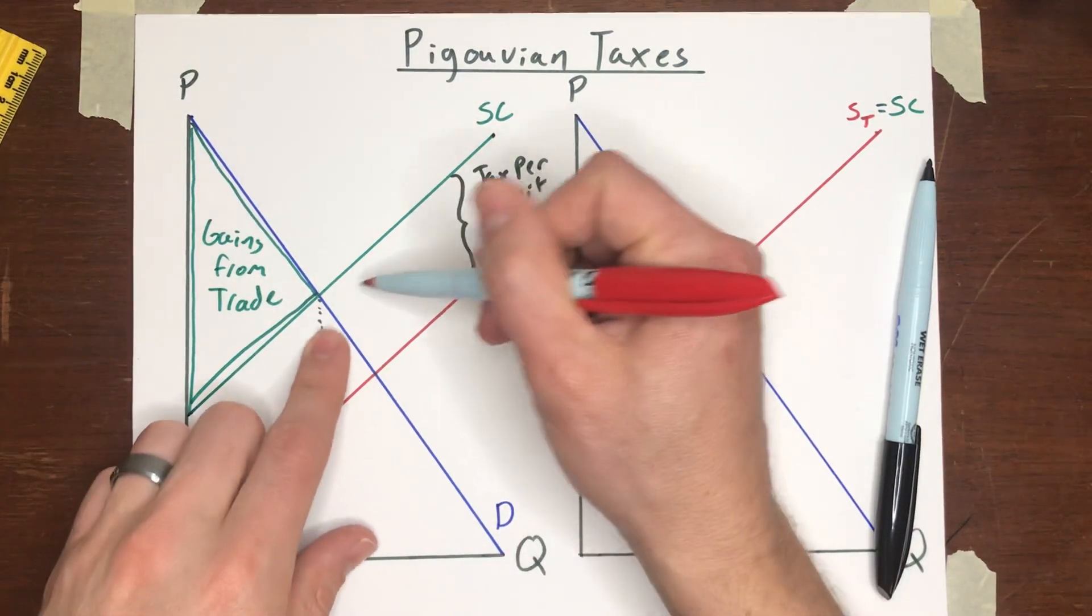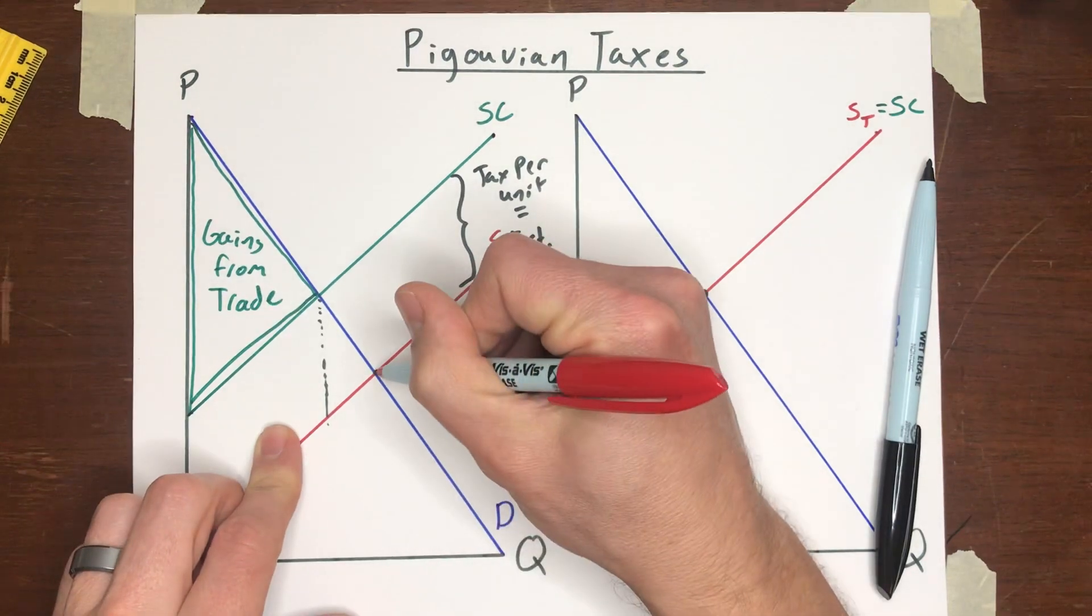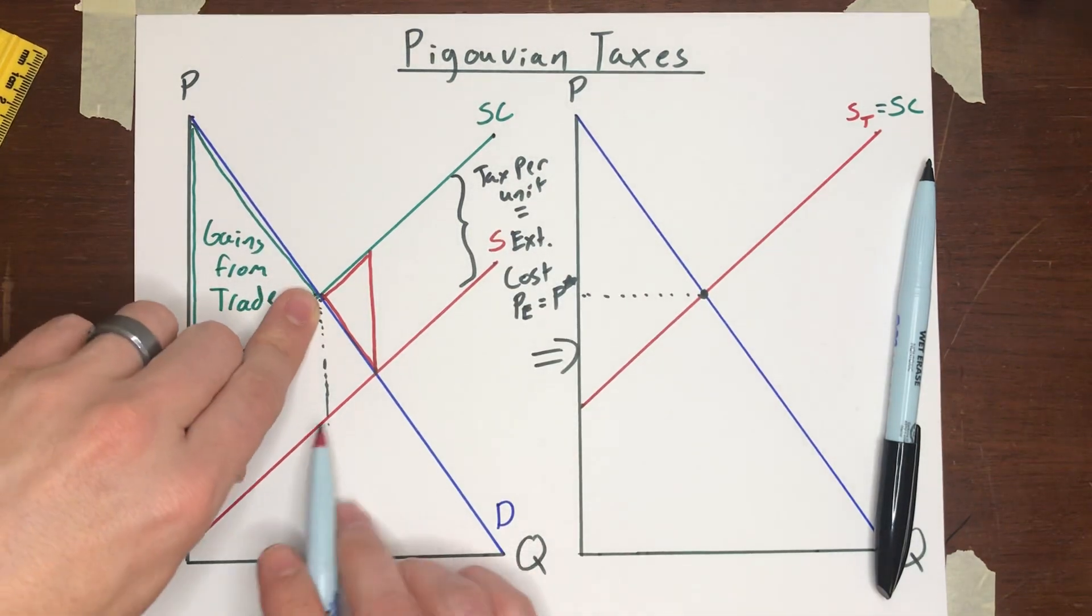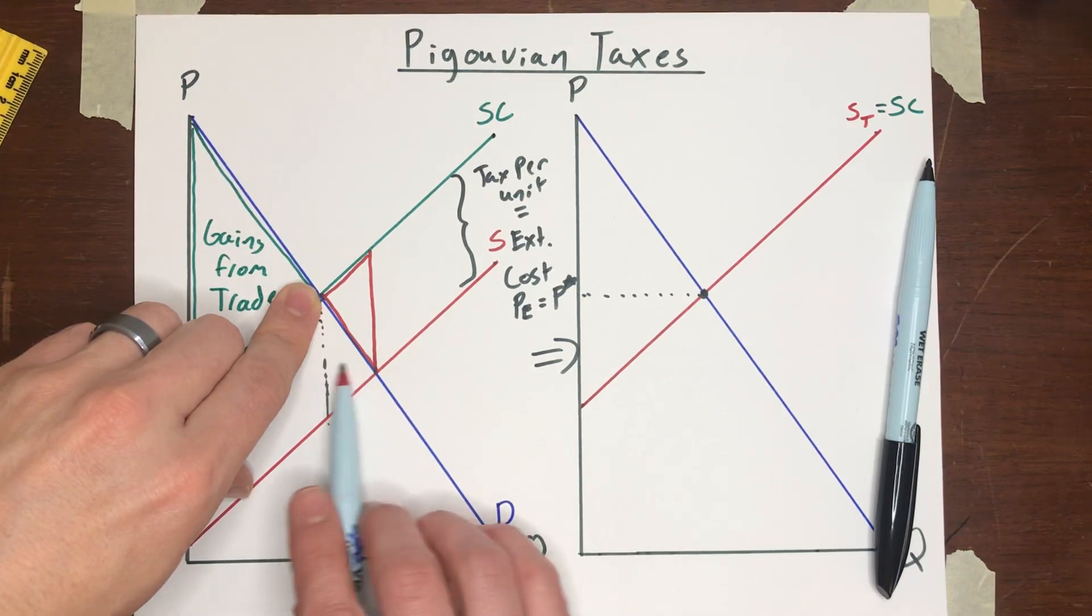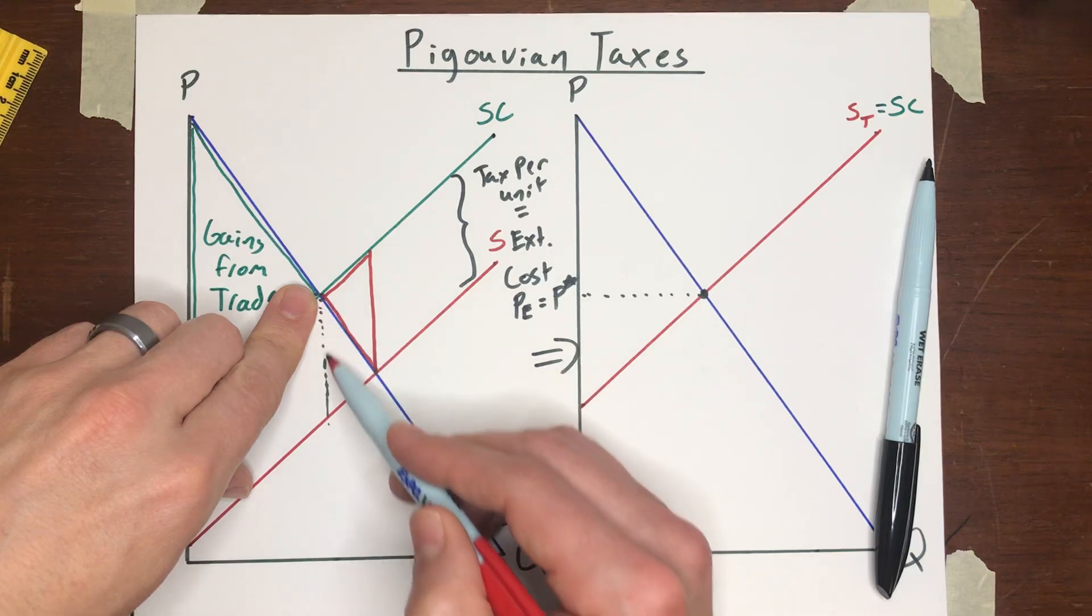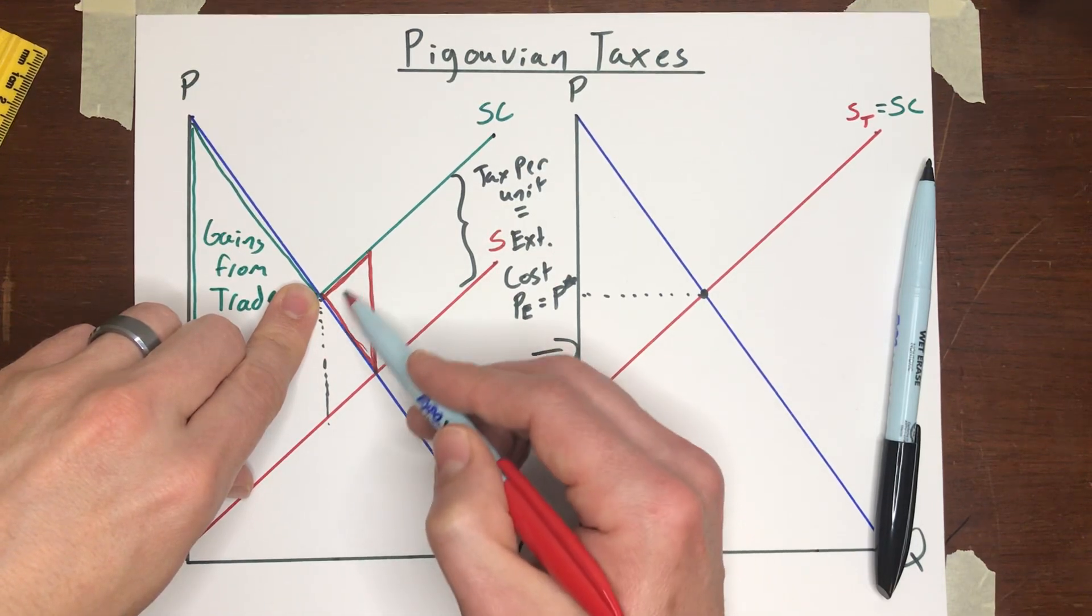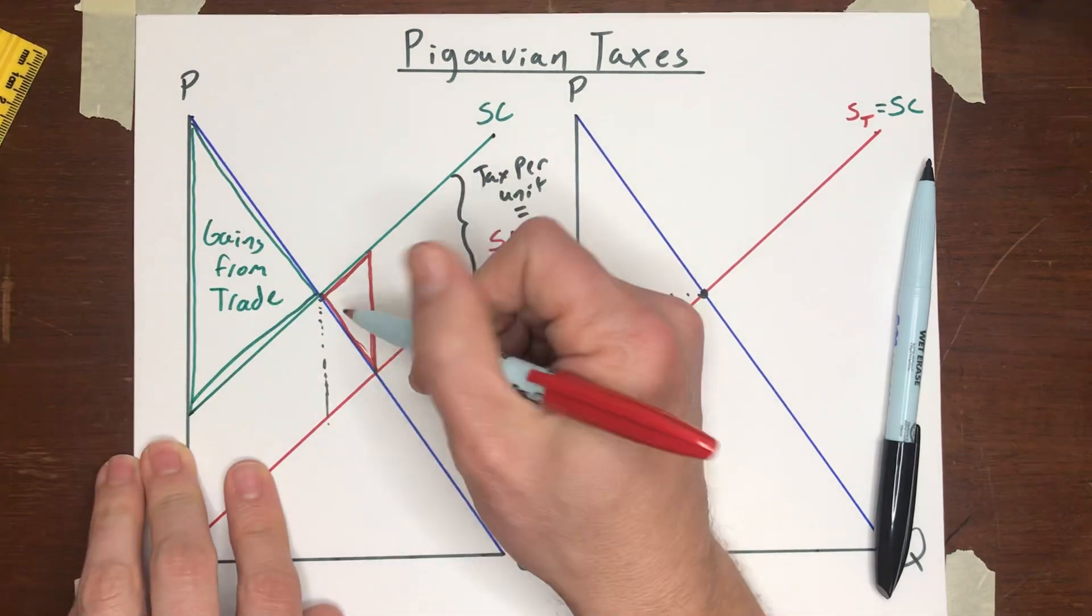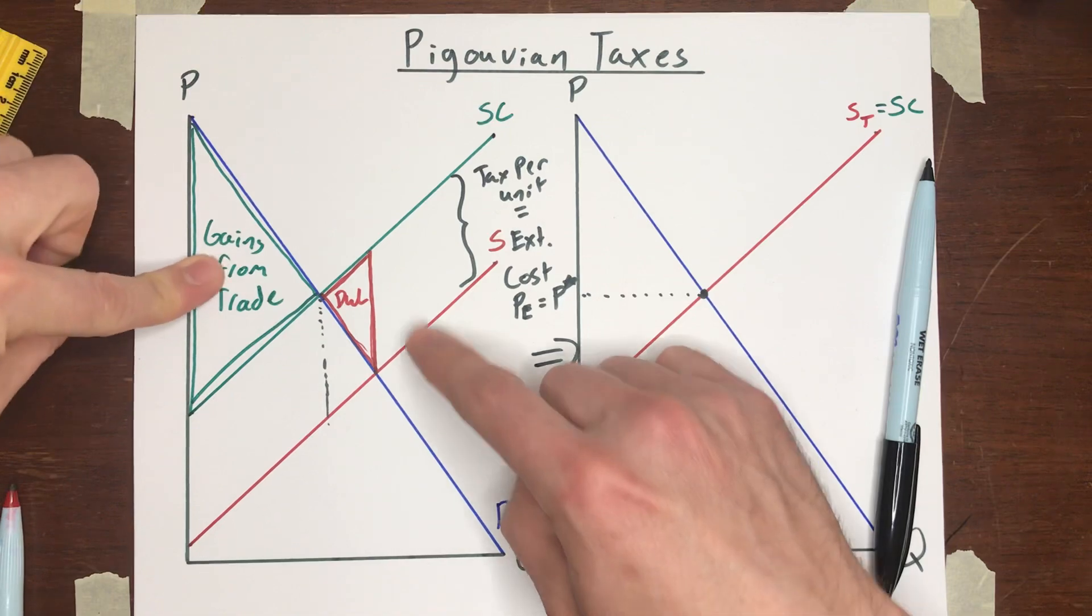Now, to the right of this social optimum, you get from Q star to QE, you do have this negative externality. So what's going on here is from these trades, from the social optimum to the equilibrium. Yes, the buyer and seller are making themselves better off, but the cost to society as a whole completely overwhelms or undoes those benefits. And more than that, right? You get this deadweight loss is the cost to society in excess of the value that was being captured by the buyers and the sellers. And so if you have this negative externality, you've got these two areas, gains from trade and deadweight loss.